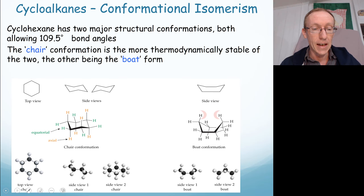Cyclohexane has two major conformations, both allowing 109.5 degree bond angles. The first one that we will talk about is called a chair conformation, and it's the most thermodynamically stable form of the two. So thermodynamically stable means it's the lowest in energy. The other form that gets these 109.5 degree bond angles is known as the boat form, and it's not as thermodynamically favorable.